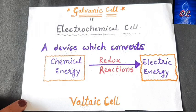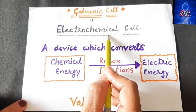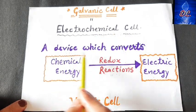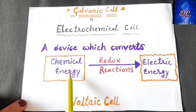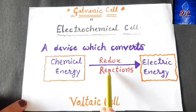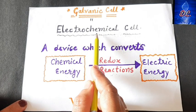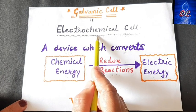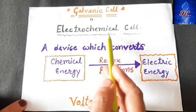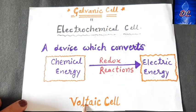Hello everyone, welcome to DNA classes. Today's video is about the electrochemical cell. A device which converts chemical energy into electric energy through redox reactions is called an electrochemical cell. One example of an electrochemical cell is the galvanic cell, which is also called the voltaic cell.